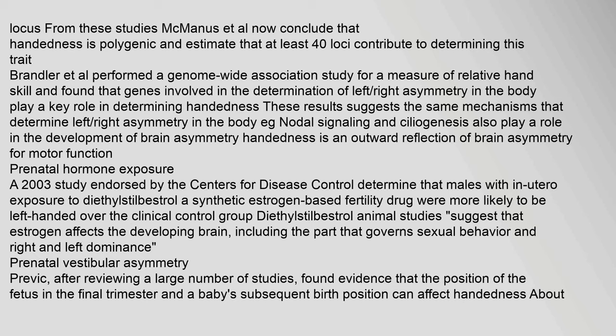Brandler et al. performed a genome-wide association study for a measure of relative hand skill and found that genes involved in the determination of left-right asymmetry in the body play a key role in determining handedness. These results suggest the same mechanisms that determine left-right asymmetry in the body — e.g., nodal signaling and ciliogenesis — also play a role in the development of brain asymmetry, with handedness as an outward reflection of brain asymmetry for motor function.